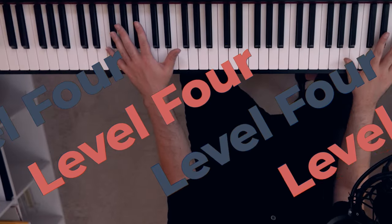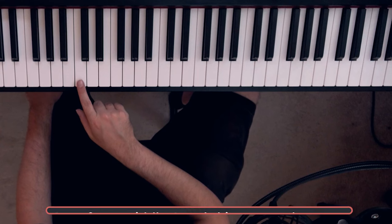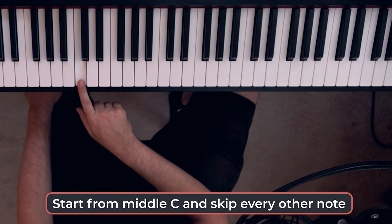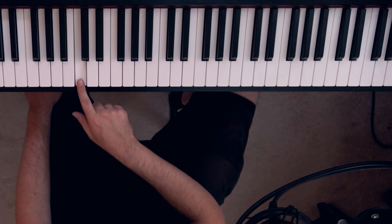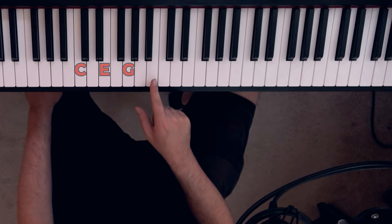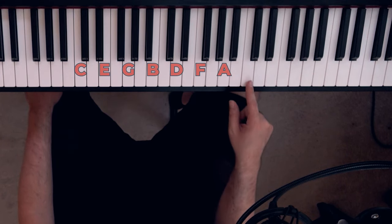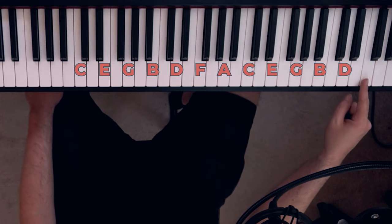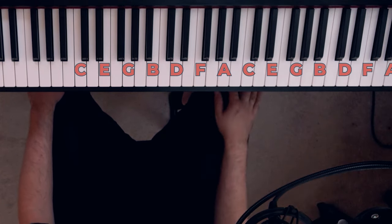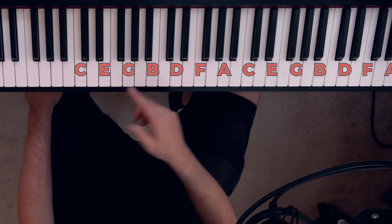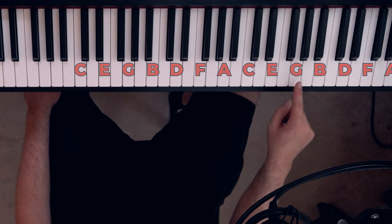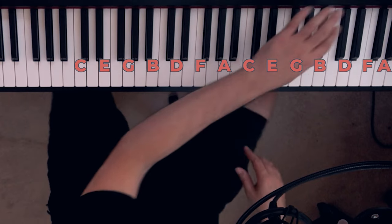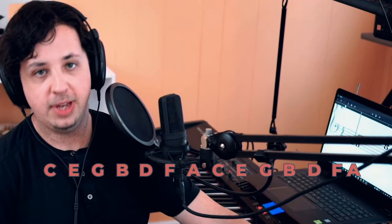Level four, skipping strategy. I want you to start from middle C, and skip every other note, every other white key, up the piano and name them. So we'll do this together. C-E-G-B-D-F-A. C-E-G-B-D-F-A. Did you notice anything? You should have noticed a repeated pattern. C-E-G-B-D-F-A.